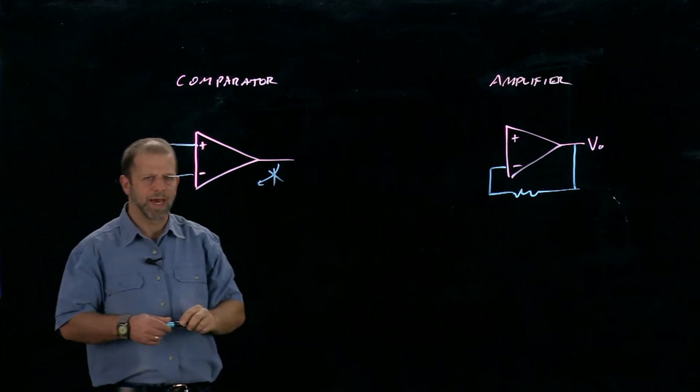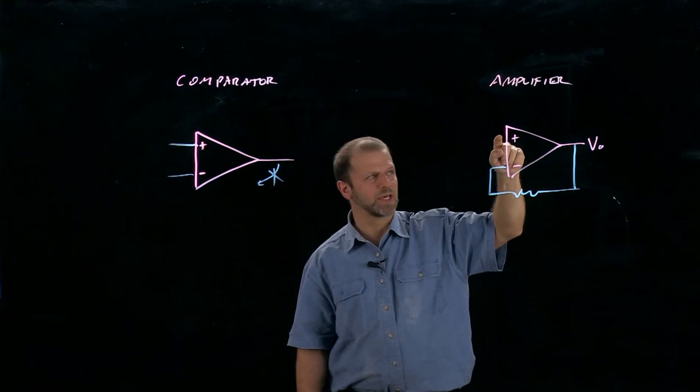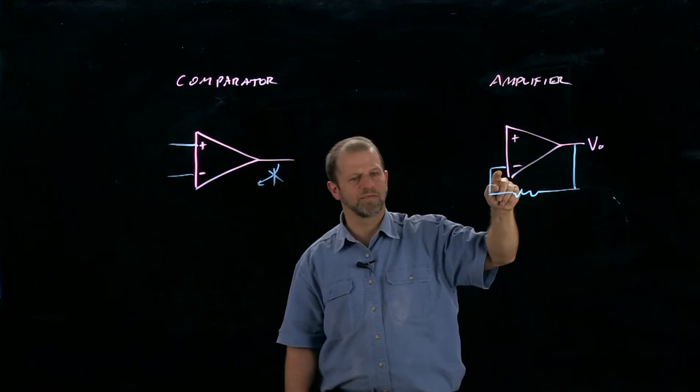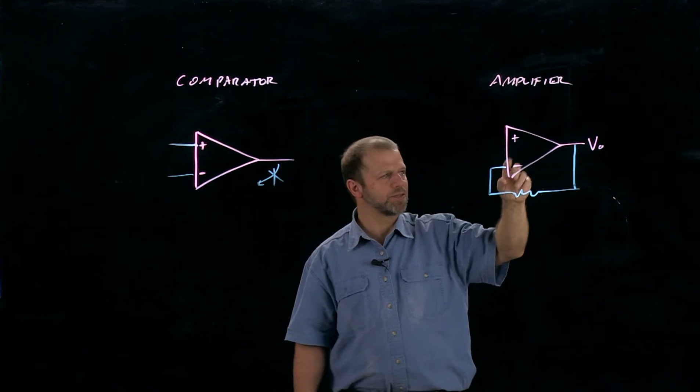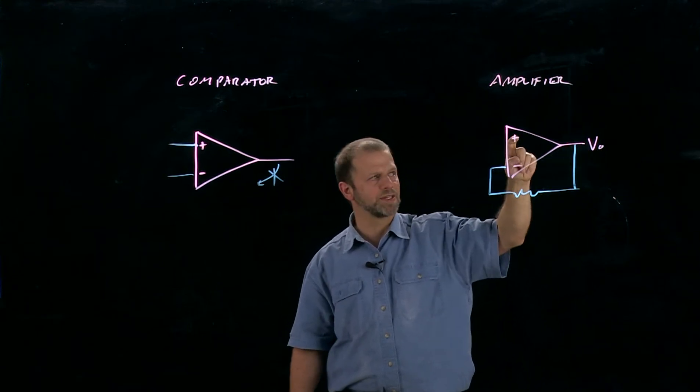Now remember, an op-amp, if it has the chance, is going to try to balance these two voltages, the voltage that it observes at this input versus the voltage that it observes at that input. In the case of an amplifier, it has a chance to do that. It can change its output voltage in order to make these match.